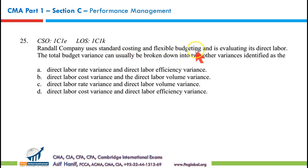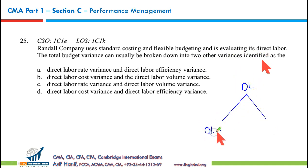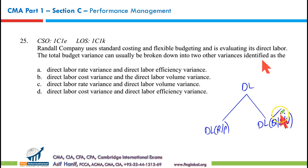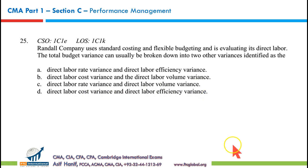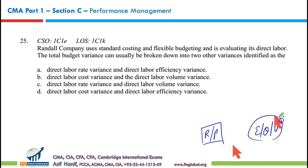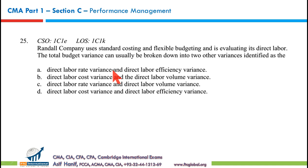Randall Company uses standard costing and flexible budgeting to evaluate direct labor. The total labor budget variance can be broken down into two variances: direct labor rate variance (also called price variance) and direct labor efficiency variance (also called quantity or usage variance). These terminology pairs are equivalent. The correct option is A: direct labor rate variance and direct labor efficiency variance.